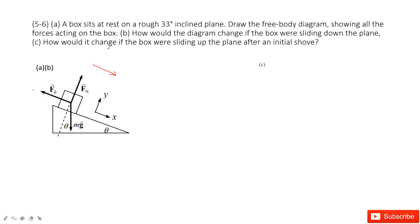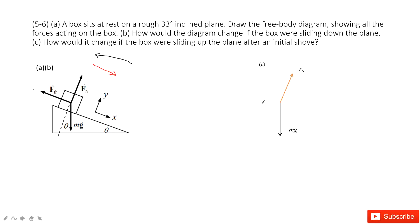The third one tells us if this box moves up. So if the box moves up, the friction must be pointing down, because the motion and the friction must be in opposite directions. So we have gravity, normal force, and the kinetic friction pointing down.